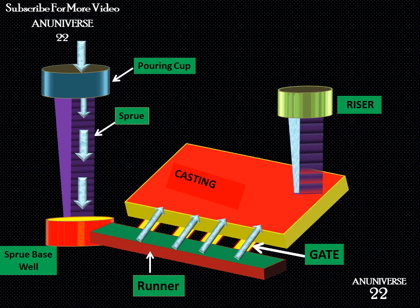The main function of a riser is to address the partial vacuum that leads to a shrinkage void, as metal and their alloys shrink as they cool and solidify, creating a partial vacuum within the casting. The riser also promotes directional solidification — a casting solidifying under the liquid metal pressure of a riser is comparatively sound. Additionally, a riser permits the escape of air and mold gases as the mold cavity is being filled with molten metal.